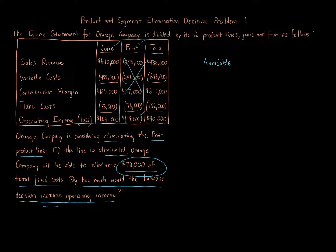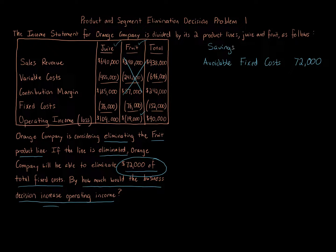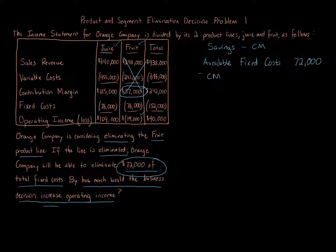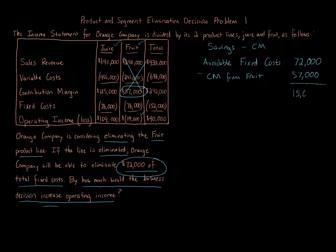An easier way is to think about avoidable fixed costs. Fixed costs will be reduced by $72,000 — that is our savings. We then subtract the contribution margin we would have earned from fruit, which is $57,000. So: avoidable fixed costs of $72,000 minus contribution margin foregone of $57,000 gives us a positive difference of $15,000. That is the increase in operating income.